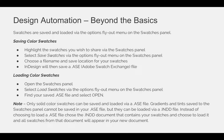InDesign will save them as a .ase file. When you're ready to load the swatches, you can go back to the option flyout menu and choose Load Swatches. Once you do that, you just need to search through your computer, find the correct .ase — Adobe Swatch Exchange — file, and then select Open and your swatches will be added to the swatches panel.